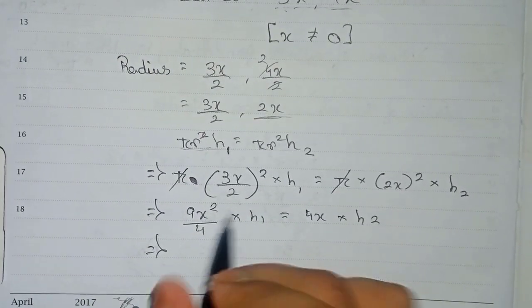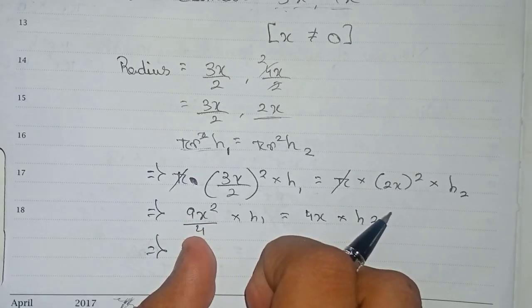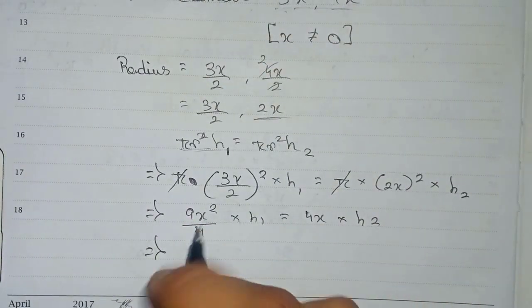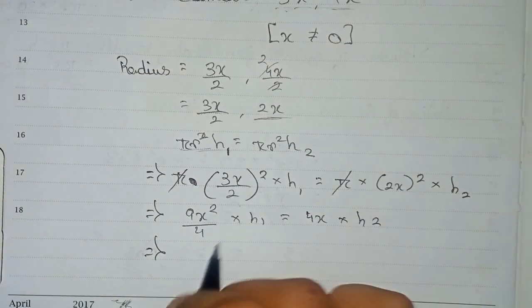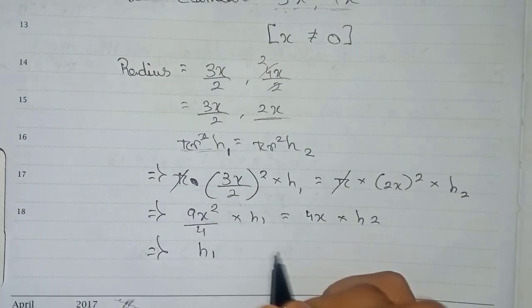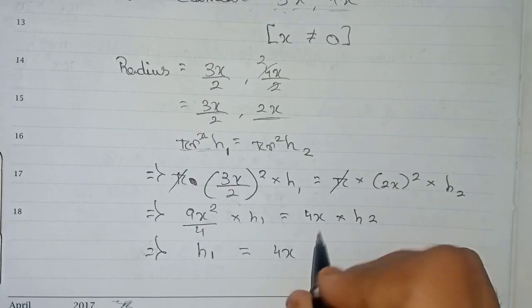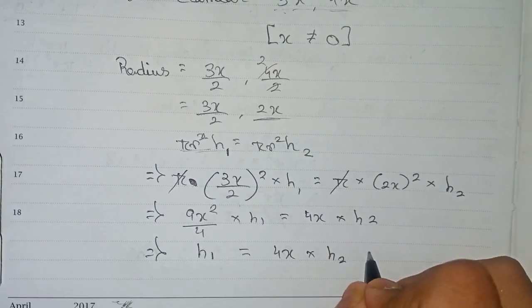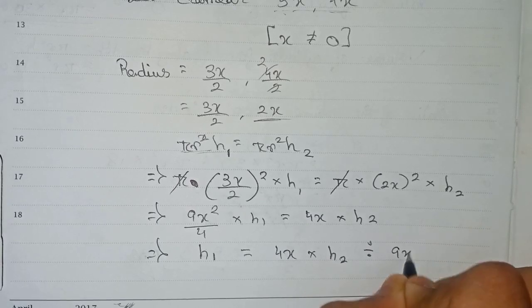So now we take this 9x squared by 4 to the other side, so it goes for division.